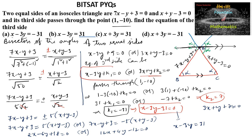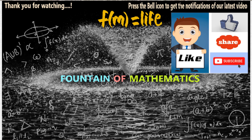We can clearly see that x minus 3y equals 31 is one of the options, which is option B. So option B is the answer. The equation of side BC can be taken as x minus 3y equals 31.